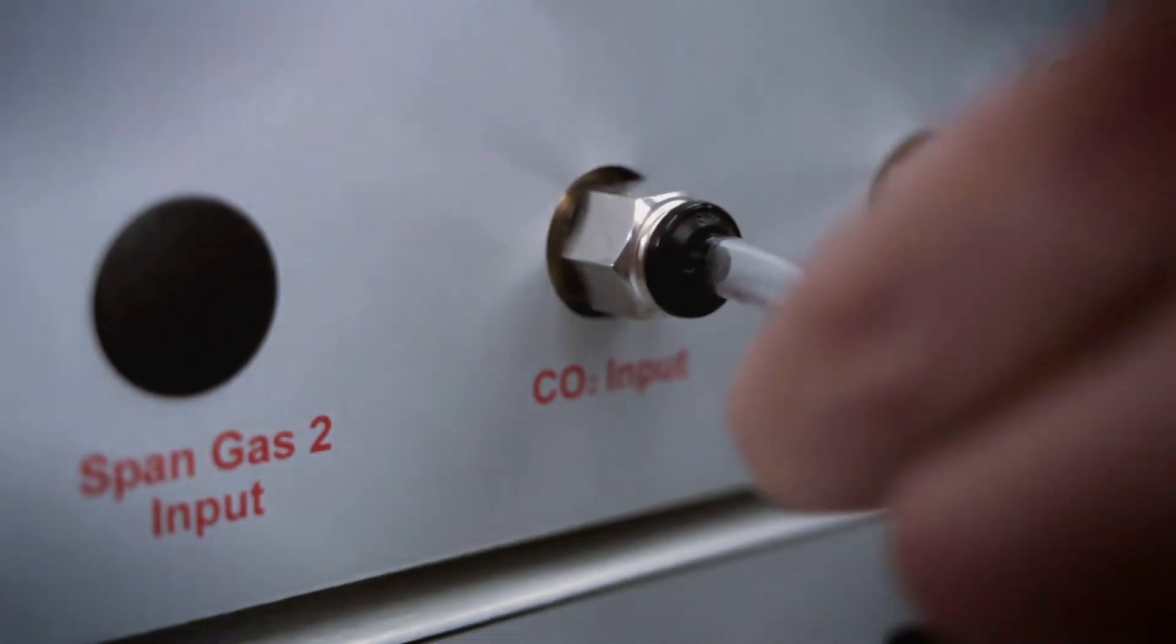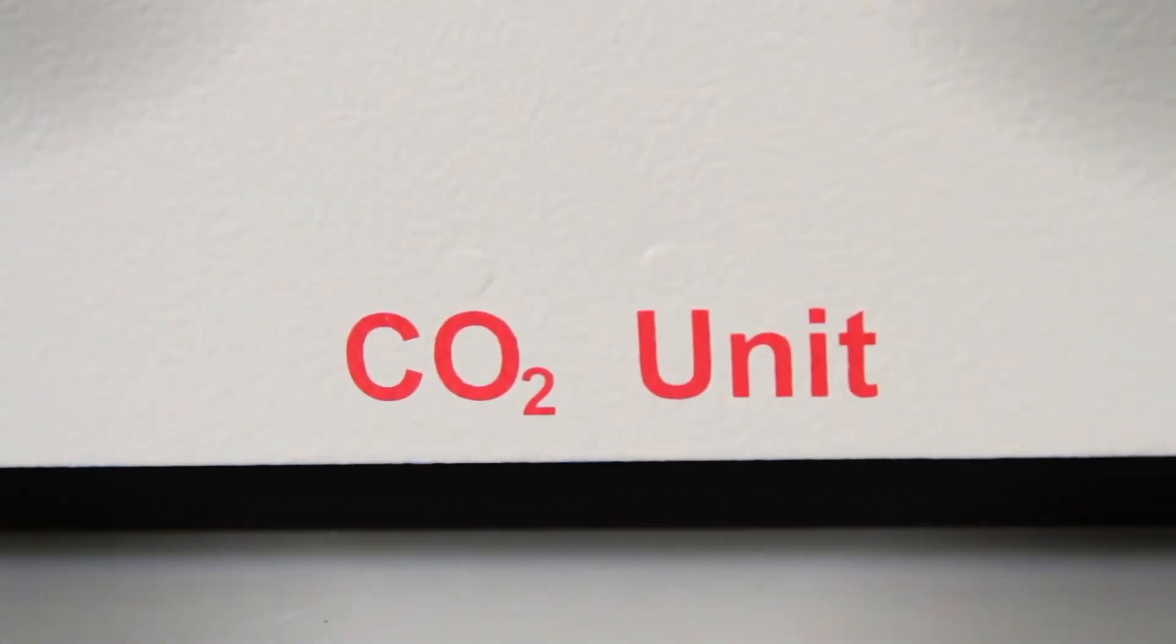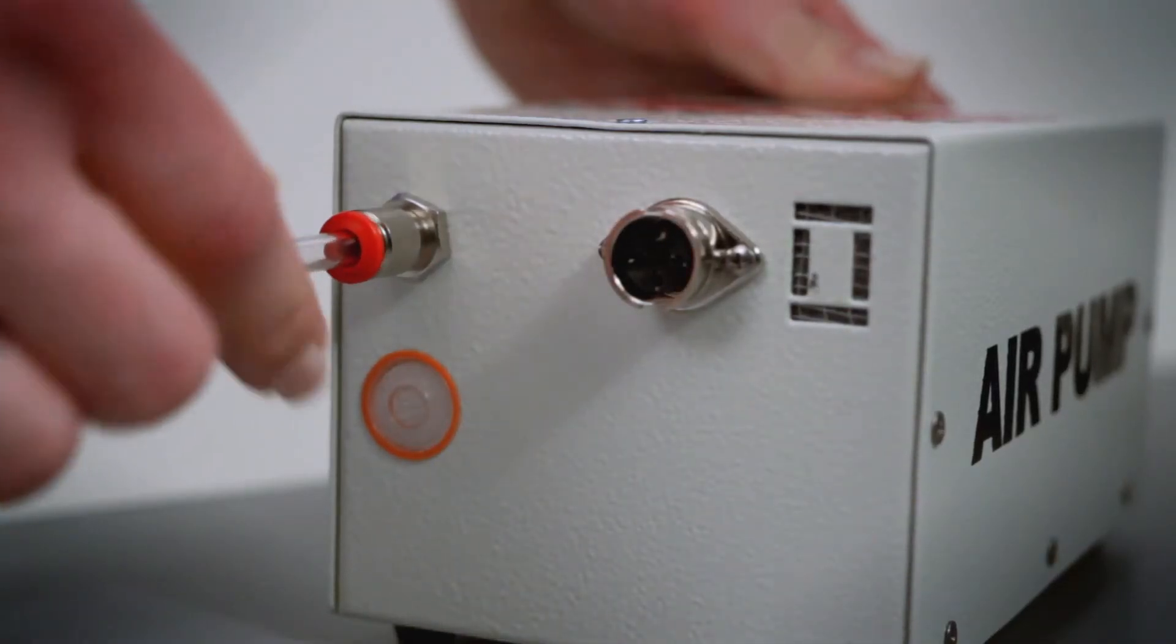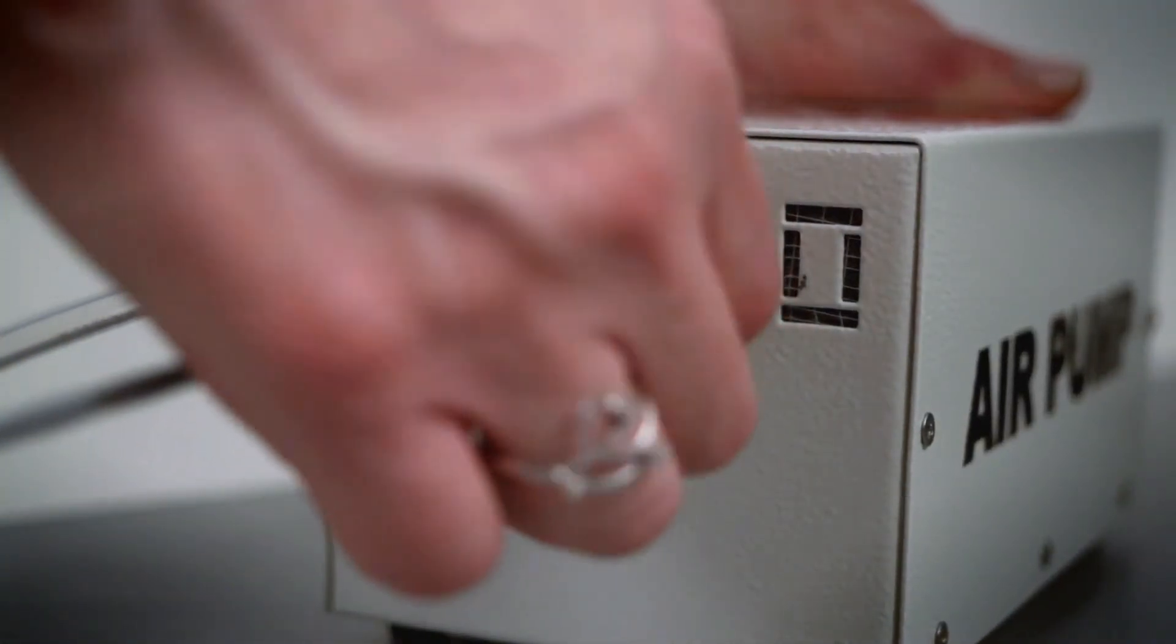Pure carbon dioxide and compressed air are needed to feed the CO2 unit. The Oco air pump can be conveniently used if compressed air is not available.